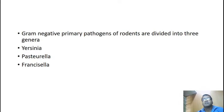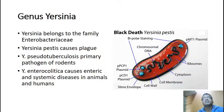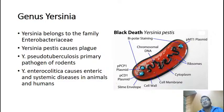We have got two more genera which are primary pathogens of rodents: Pasteurella and Francisella. We are going to discuss about all these three genera. Yersinia pestis causes plague. Yersinia pseudotuberculosis is a primary pathogen of rodents. Yersinia enterocolitica causes enteric and systemic disease in animals and humans.